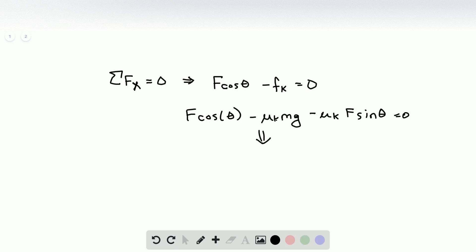Solving this for capital F, which is our desired quantity, we get that F is μk times mg over cosine theta minus μk sine theta, and that's the force that the woman has to apply to keep the crate moving at a constant speed.